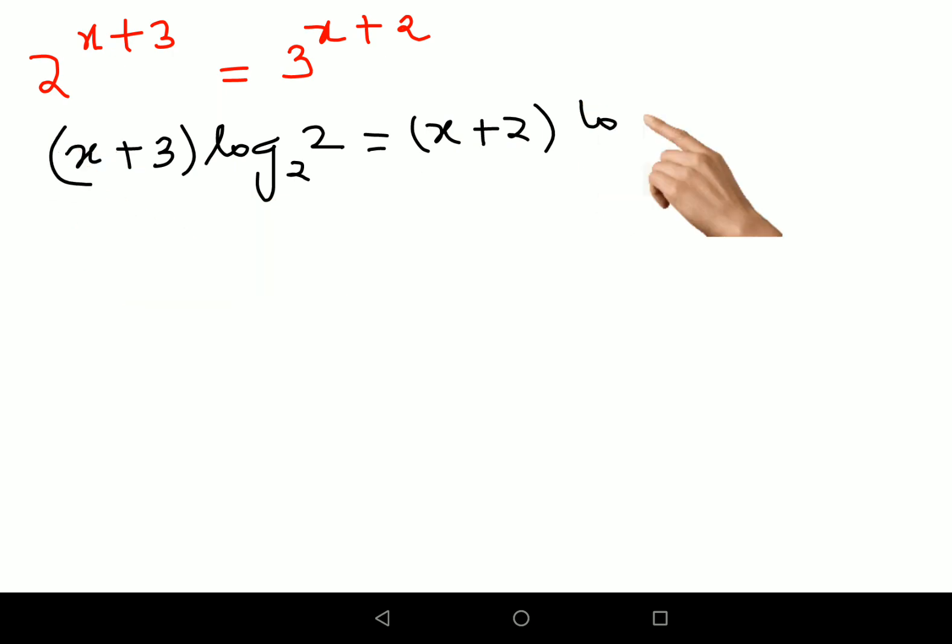Obviously I'm taking log to the base 2, so the log to the base 2 will be common to both sides. Why have I done this? A lot of people wonder but trust me if you can do this it's going to make your entire question very simple. Why? Because see, understand log of any number to the base of same number is always 1, so by default this entire value became 1.